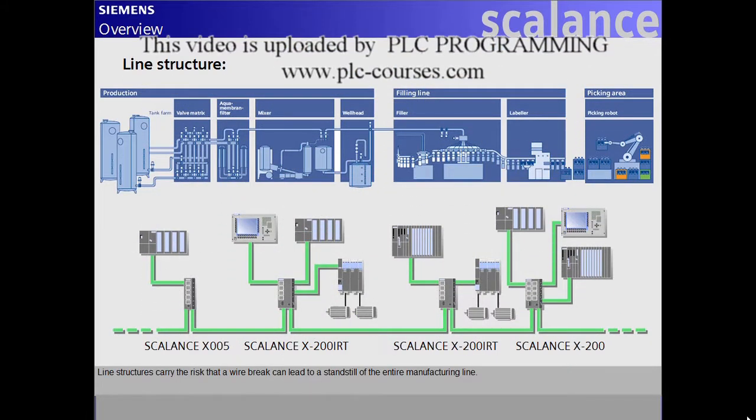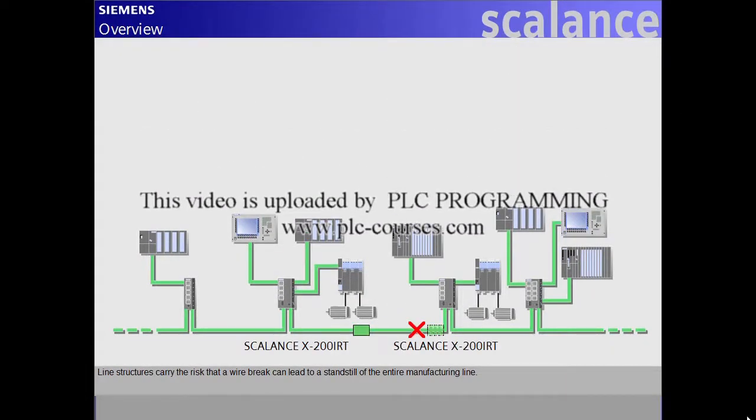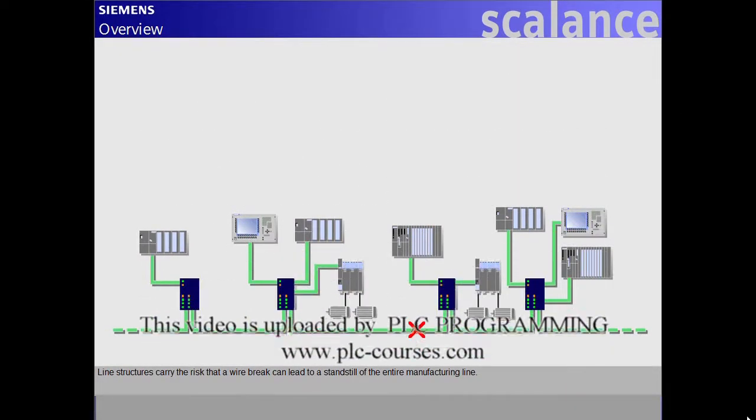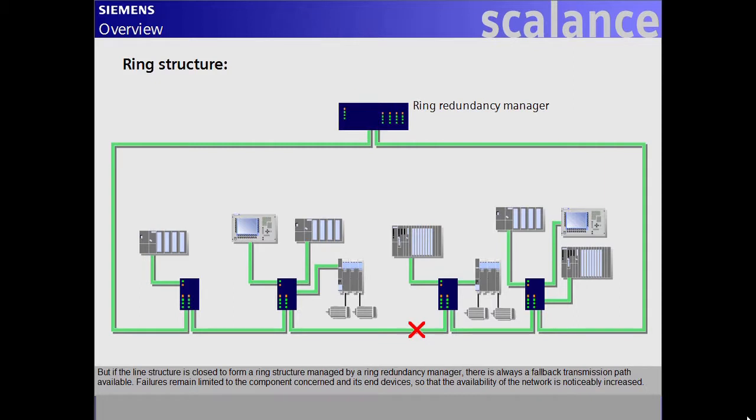Line structures carry the risk that a wire break can lead to a standstill of the entire manufacturing line. But if the line structure is closed to form a ring structure managed by a ring redundancy manager, there is always a fallback transmission path available. Failures remain limited to the component concerned and its end devices, so that the availability of the network is noticeably increased.